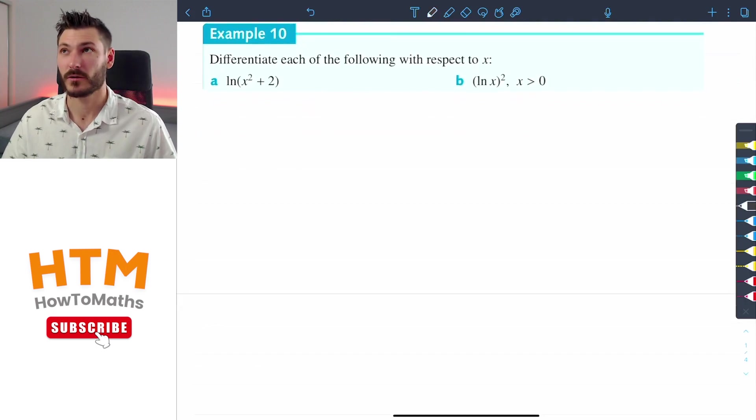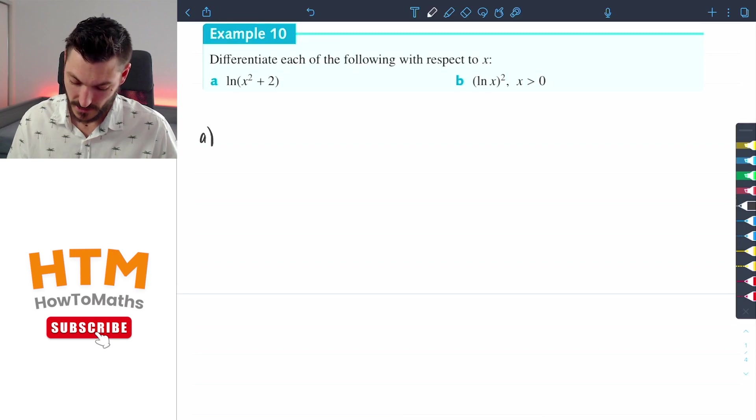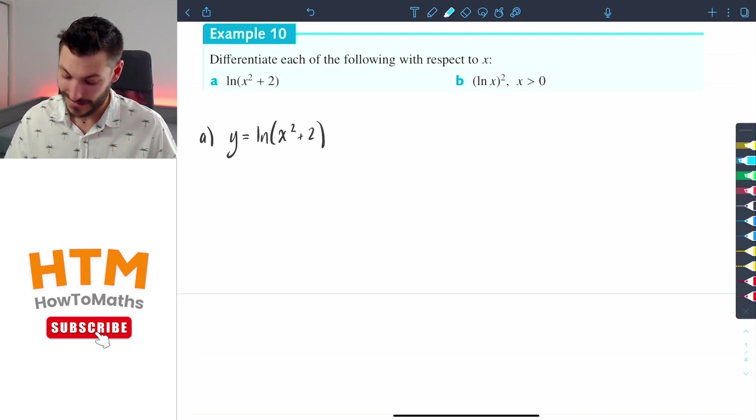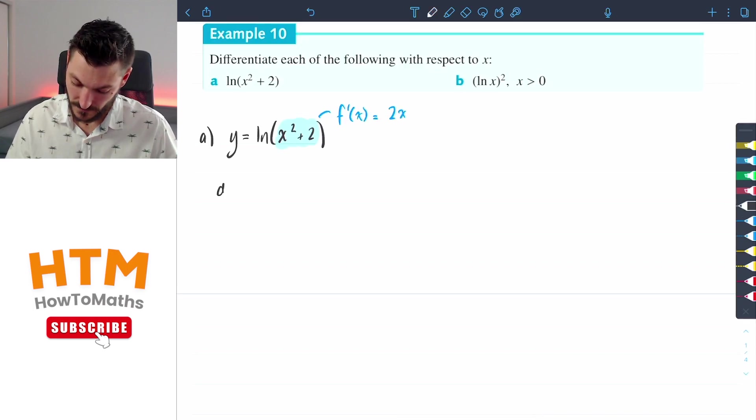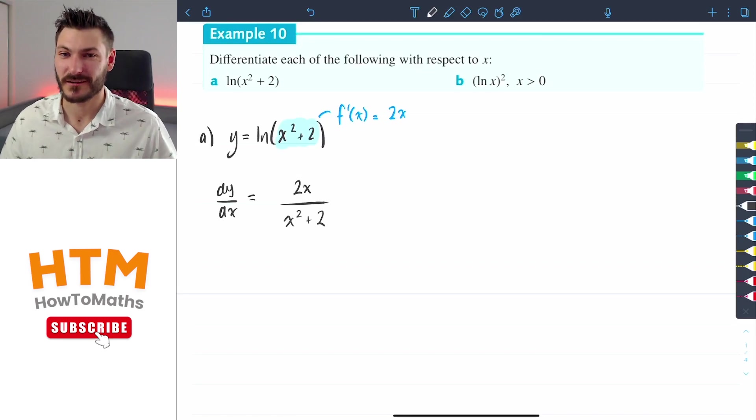So differentiate the following with respect to x: ln of x squared plus 2. So I'll write the function down, y equals ln of x squared plus 2, and again we're going to be finding the derivative of the inside function f(x). f'(x) is therefore going to equal 2x. We're going to therefore have the derivative of y with respect to x equal to 2x divided by x squared plus 2. And again you cannot cancel out any of those x's because we have an addition on the denominator.